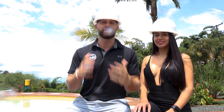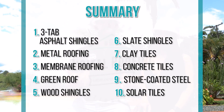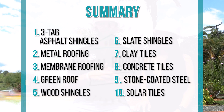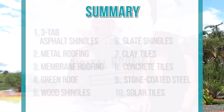We're going to talk about 10 different types of roofing materials you should consider for your next roof. First: three-tab shingle. Second: metal roofing. Third: membrane roofing. Fourth: green roofing. Fifth: wood shingles or cedar shake. Sixth: slate shingles. Seven: clay tiles, also known as Spanish tile. Eight: concrete tile shingles. Nine: stone coated steel metal roofs. And finally, number ten: solar tiles.